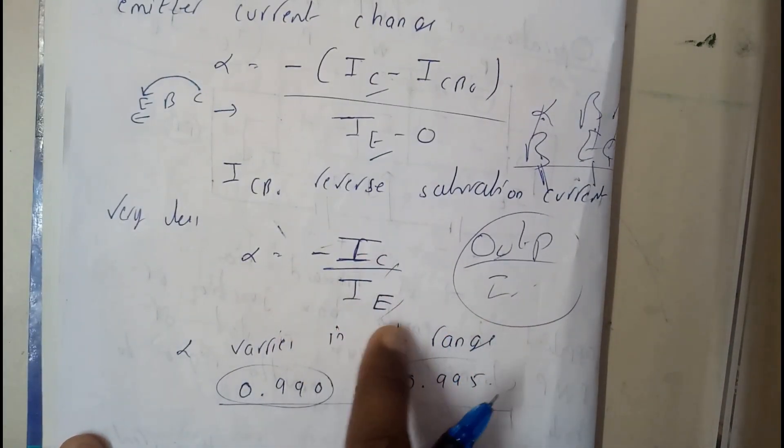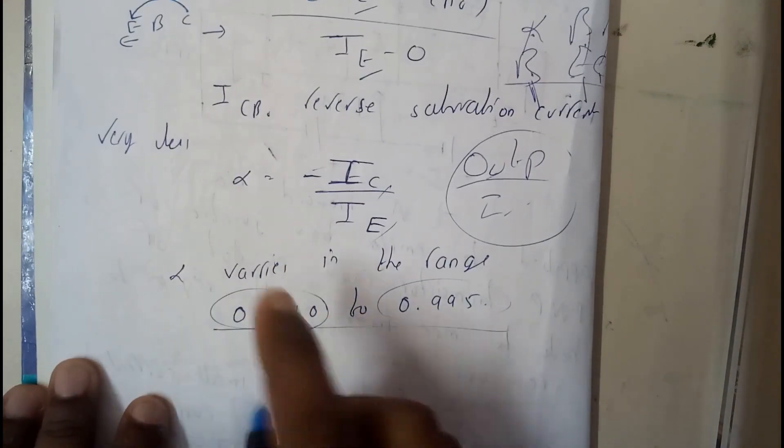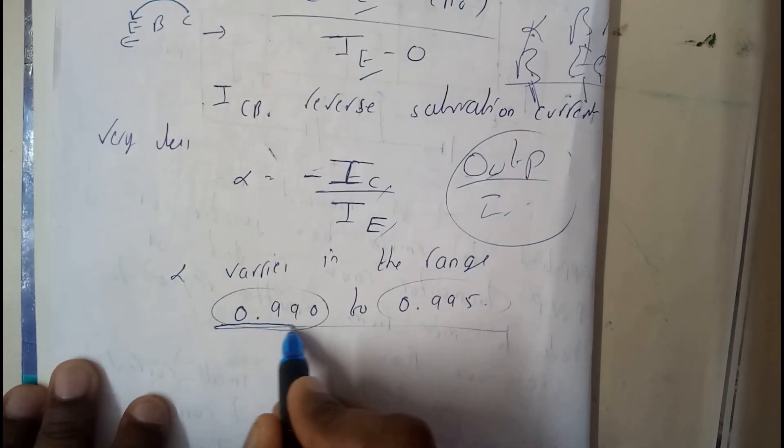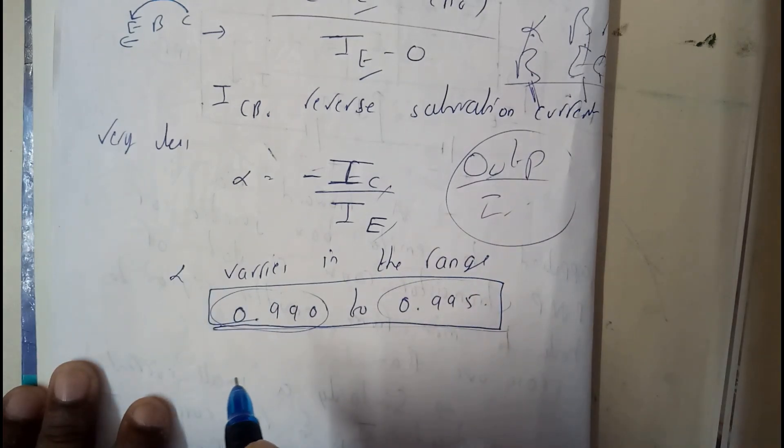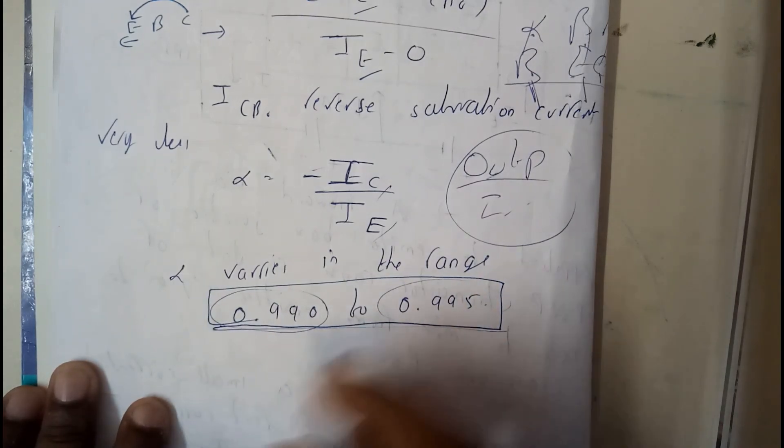So alpha is equal to minus IC by IE. So it varies from 0.990 to 0.995 okay guys. So I hope everyone got a small idea on large signal gain.